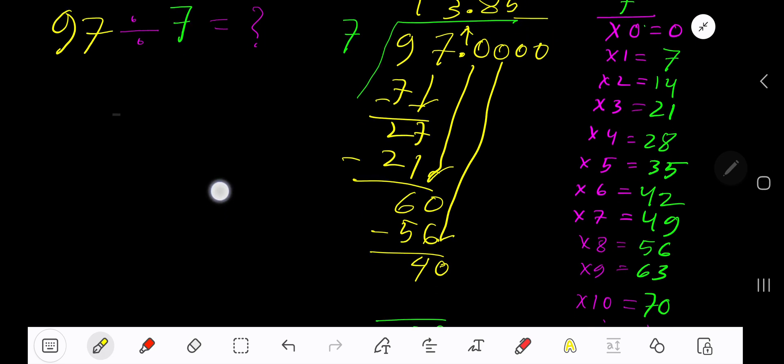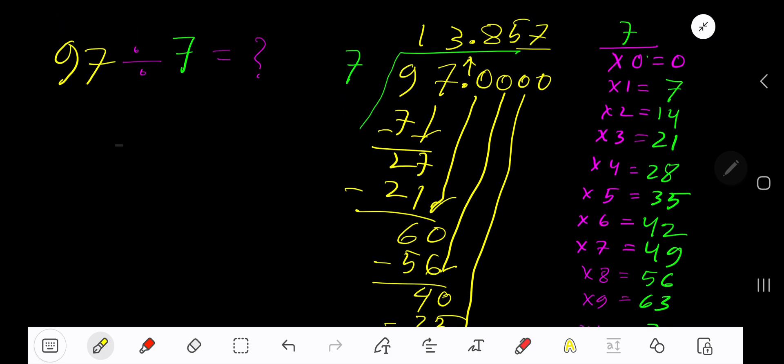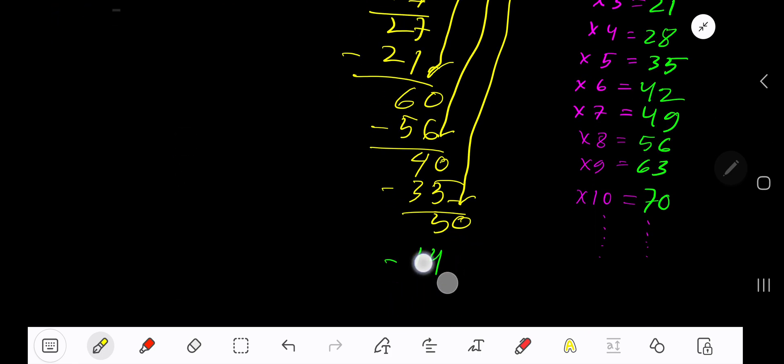Subtract. You are getting 5. Bring down another 0. 7 goes into 50 how many times? 8 times would be 56, which is greater, so 7 times. 7 times 7 is 49. Subtract. You get 1.